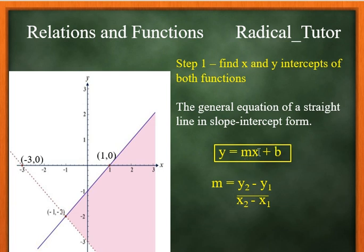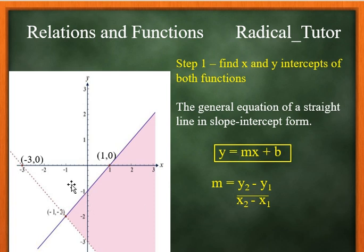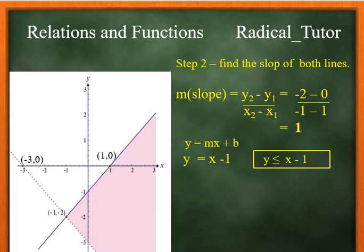The general equation for a straight line is y equals mx plus b, where m is the slope — which is the vertical change over the horizontal change — that is (y2 minus y1) over (x2 minus x1). And b is the y-intercept. Let's find the y-intercept of this line, which is minus 3.